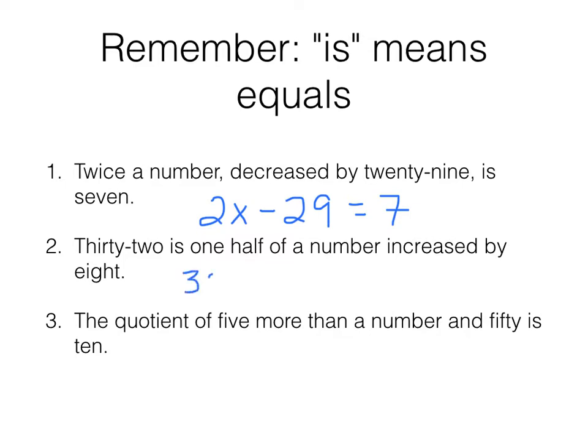32 is one half of a number increased by 8. Now you could have that or you could have 32 is. One half of a number could be the number divided by 2 and then increased by 8. Like we've learned in class, one half times is the same thing as divide by 2.